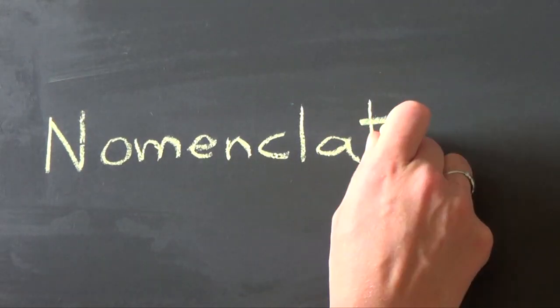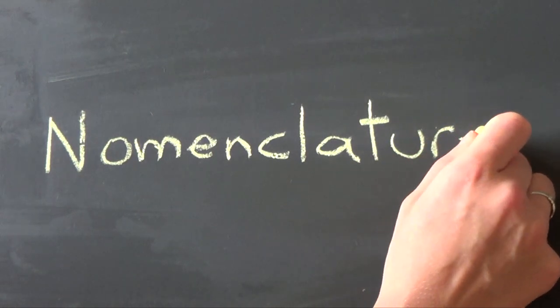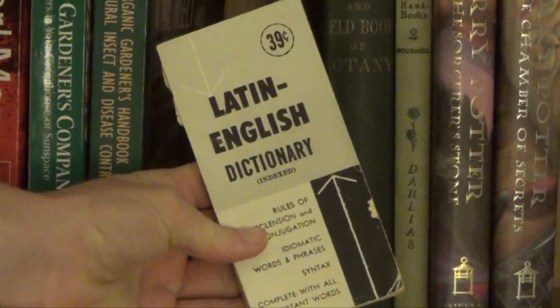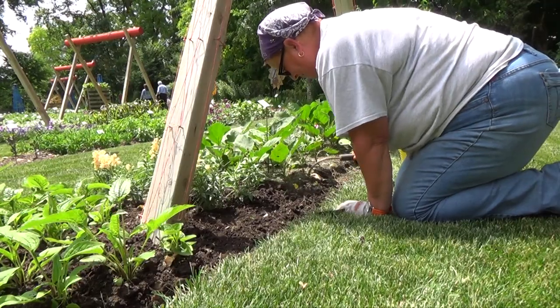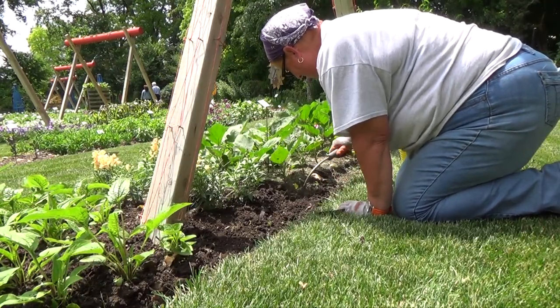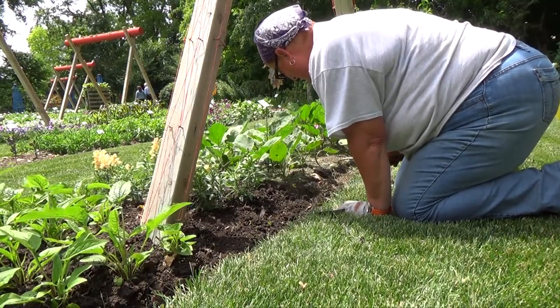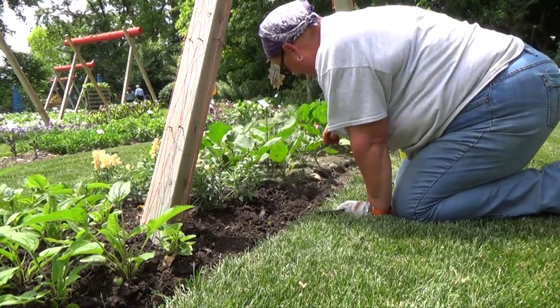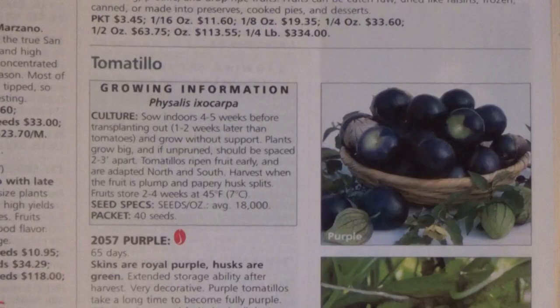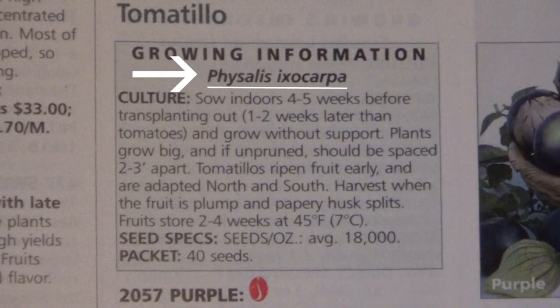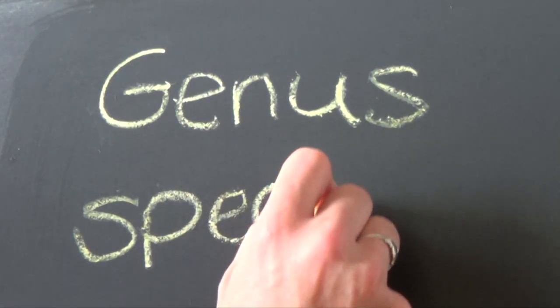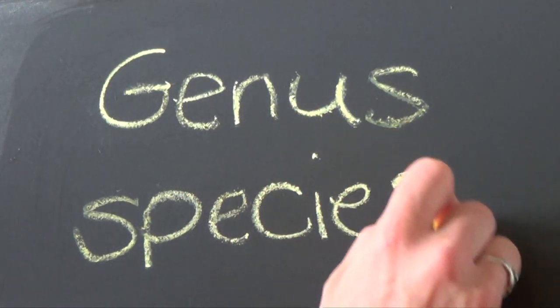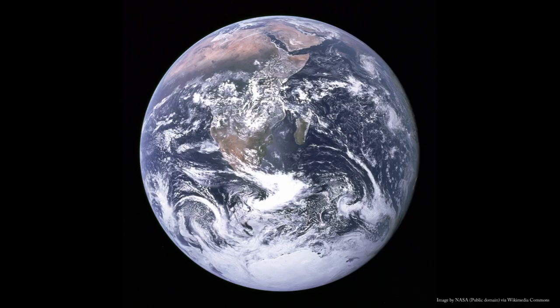Nomenclature refers to the scientific naming of plants using Latin. Don't rush out and get that Latin dictionary, however — relax. Memorizing these names is not necessary to be a successful gardener. Much of the time we refer to cultivated plants by their common names. However, when you look at an entry in your seed catalog, notice an italicized name by each entry. That's the scientific name and stands for the genus and species that it belongs to. These Latin names are universal the world around and help to classify plants.